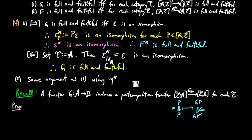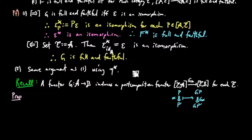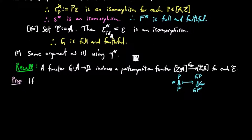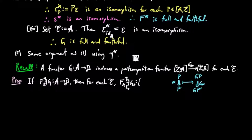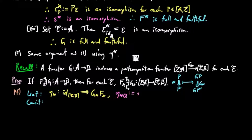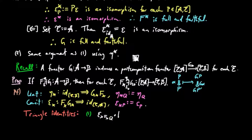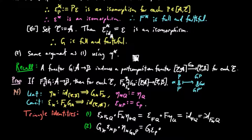The results above also hold for this situation. Namely, if F⊣G is an adjoint situation, then for each category E, F_*⊣G_* is an adjoint situation, where the unit is defined on component Q to be ηQ and the co-unit is defined on component P to be εP. The triangle identities follow immediately from the triangle identities for F⊣G, as can be seen here.